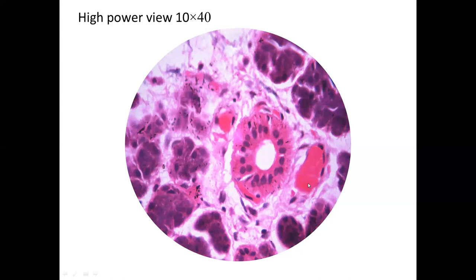The next slide shows a high power view of the same slide. At high power, you cannot see as many structures as before — a small area in the middle has been enlarged. When you look at your microscopy video, they will tell you that once a slide is focused, you must bring the structure of interest to the center before moving to high power. Otherwise, that structure will be lost, as only the exact center is enlarged at high power.